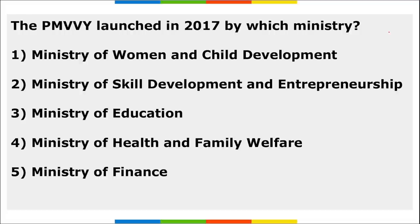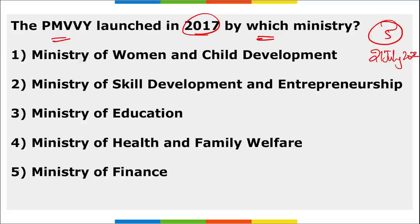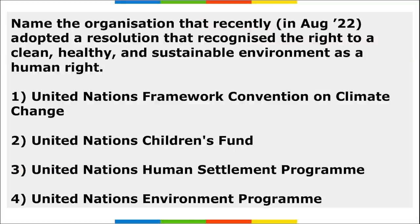Pradhan Mantri Vaya Vandana Yojana completed five years on July 21st, 2022. It was launched in 2017 by the Ministry of Finance. Under this scheme, the minimum investment has been increased from ₹1,56,000 for a pension of ₹12,000 per year to ₹1,62,000 for a pension of at least ₹1,000 per month. This scheme offers a guaranteed pension payout to senior citizens and can be purchased offline or online through the Life Insurance Corporation.